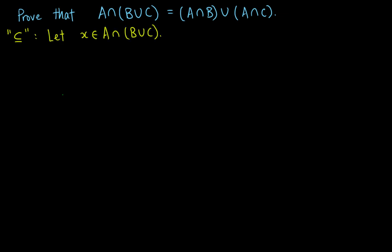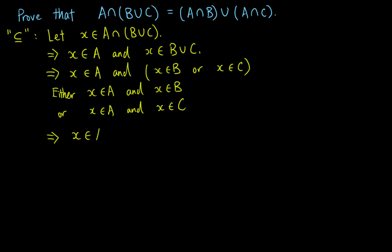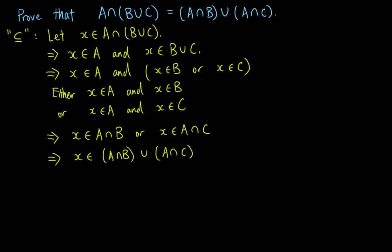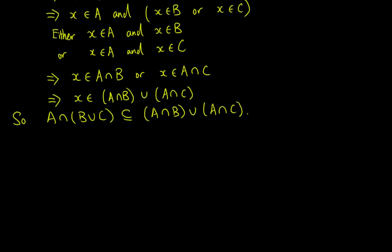Let x be an element of A intersect the union of B and C. Applying the definition of the intersection, we know that x is in A and x is in B union C. Then we make use of the definition of the union, and write x in B union C as x in B or x in C. Now, we need x in A, and either x in B or x in C. So one of two things can happen: either x in A and x in B, or x in A and x in C. This means that x is in A intersect B, or x is in A intersect C. In other words, x is in A intersect B union A intersect C. So we have shown that the left-hand side is contained in the right-hand side.